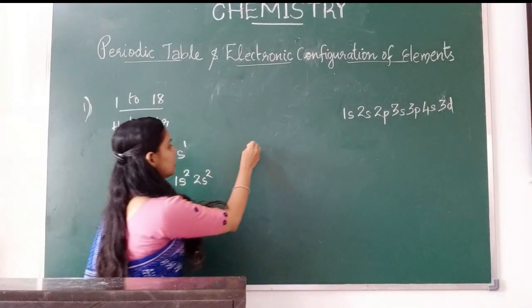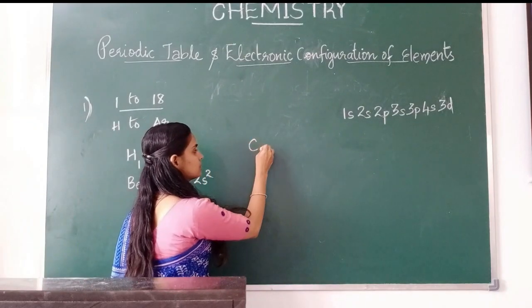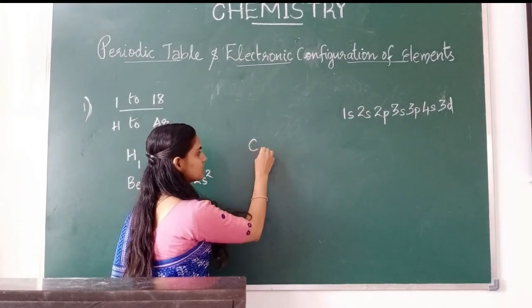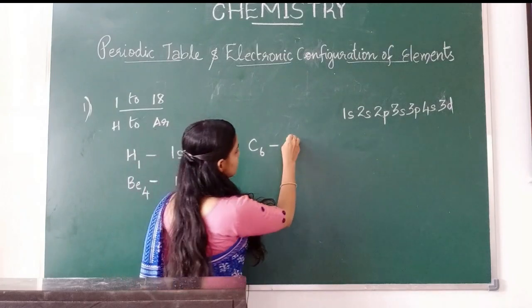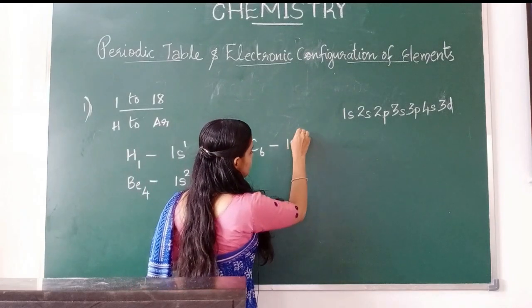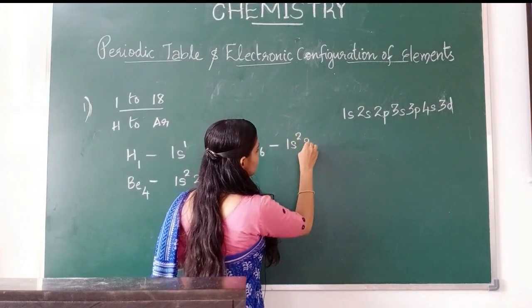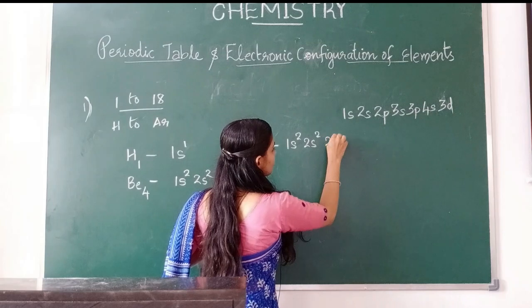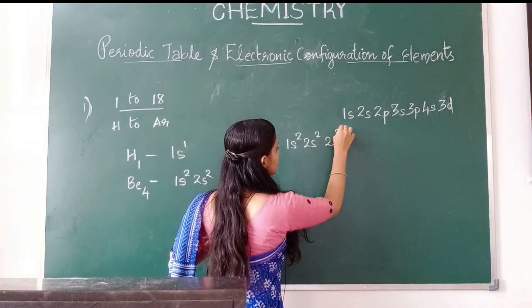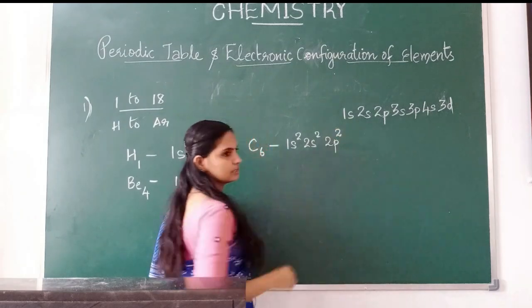Next example: carbon. Atomic number 6. Electronic configuration: 1s2, 2s2, 2p2.